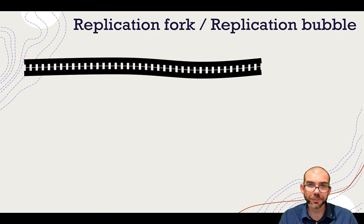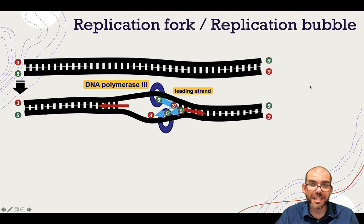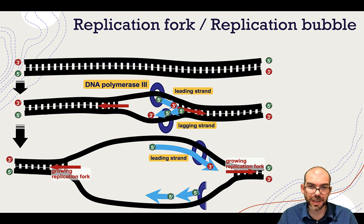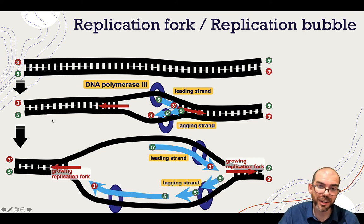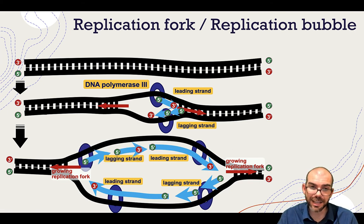Looking at the whole picture: one end has the leading strand on the bottom and the lagging strand on top. As those lagging strands build out toward the other replication fork, they're no longer going to have this directionality problem — they'll actually become the leading strand on the other end of the bubble, because now they're building in the direction toward the fork. The opposite is true for the leading strand on top: even though it's leading here, its origin was actually lagging because of this directionality problem within the replication bubble.